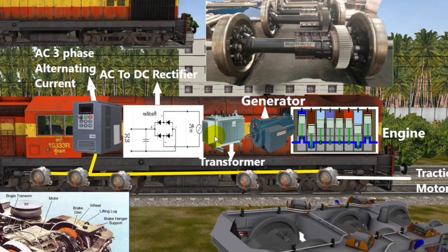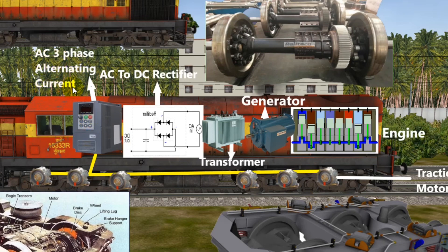The alternating current has fluctuations. The AC current is passed through a rectifier, which converts AC current to DC current. The converter then processes the DC current through an inverter, which converts the DC current back to AC current.